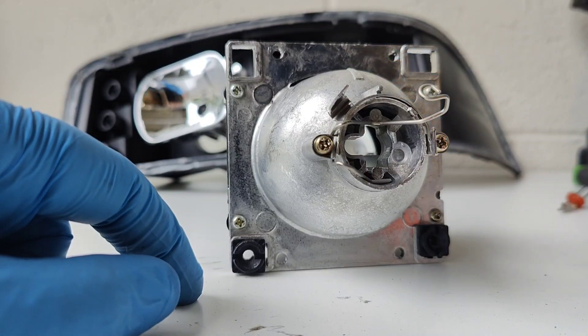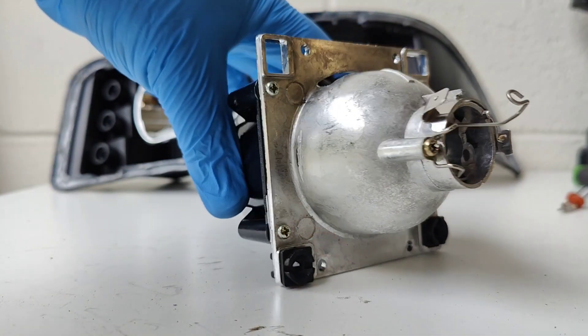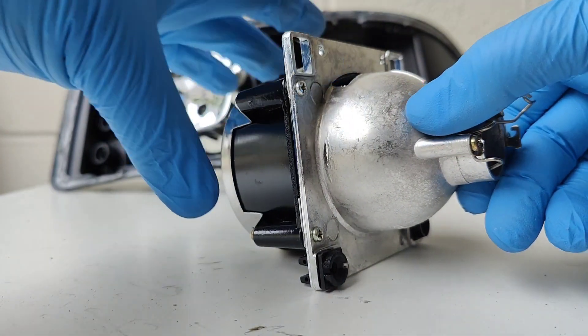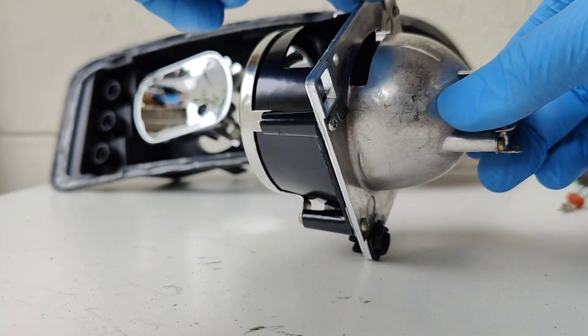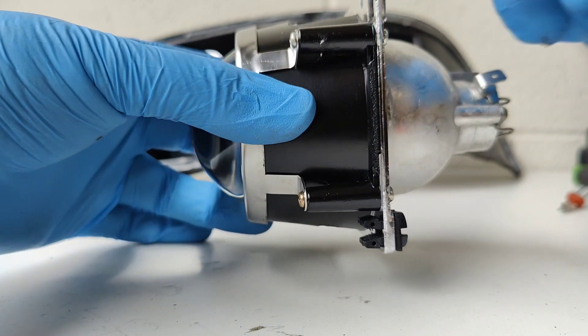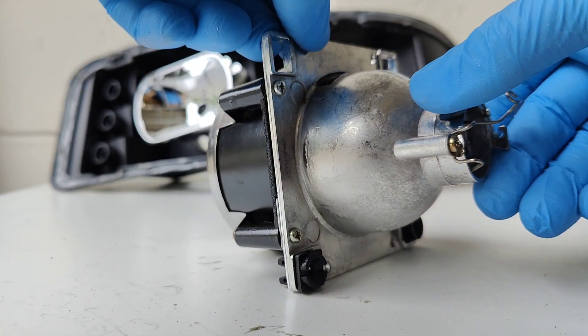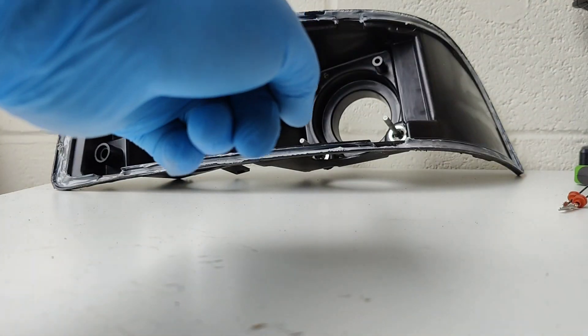What we're going to do is take this bracket, cut off the reflector bolt, and use just this flat piece of metal as the bracket, because we don't have a bracket for this style yet.